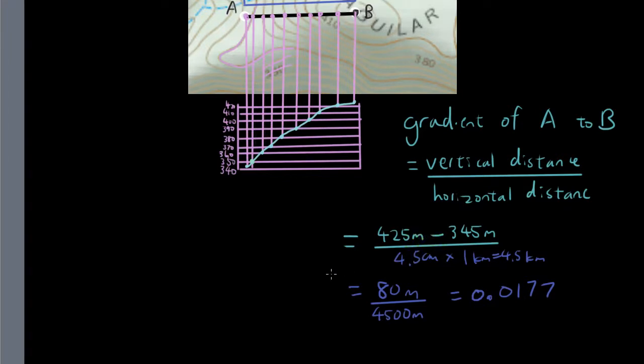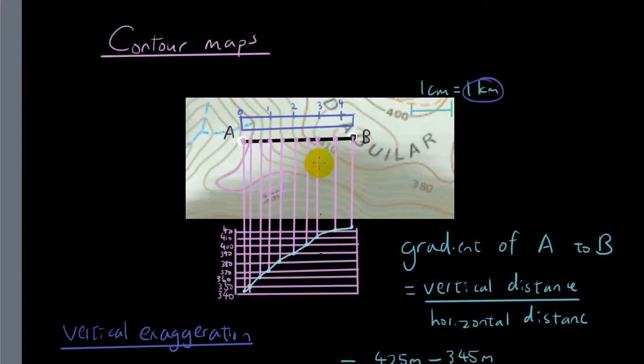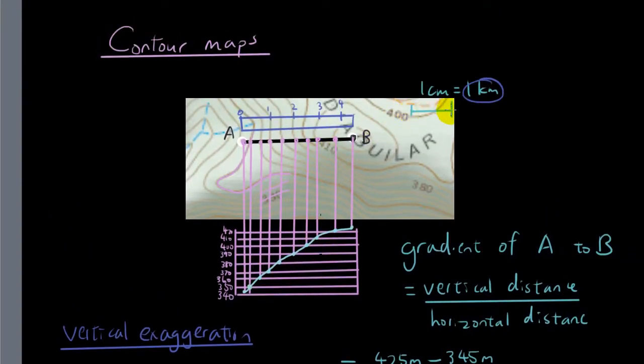The next thing we want to calculate is called the vertical exaggeration. What is the vertical exaggeration? Vertical exaggeration is basically saying how much you're exaggerating the slope because you're using a different scale horizontally compared to vertically. Horizontally, we are using one centimeter equals one kilometer, so that is the scale of this map if you're going from point A to point B.